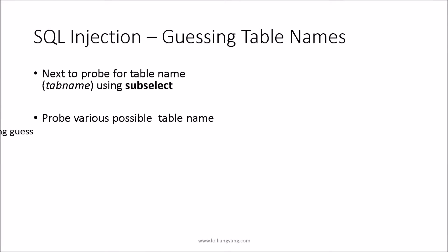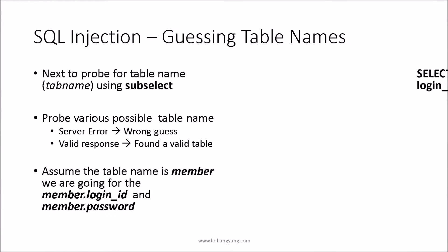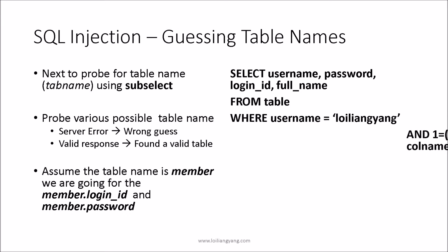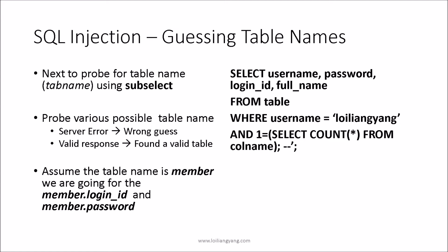We will not be staying on the same table for querying sensitive data — there can be many more tables in the database. For example, the database could have a human resources table, a member table, or employee tables, all containing potentially critical information we can extract. There are only two ways for a database server to respond: an error means the guess is wrong; a value response means we found a valid table. For instance, finding a 'member' table lets us use member.login_id and member.password to access columns within it.